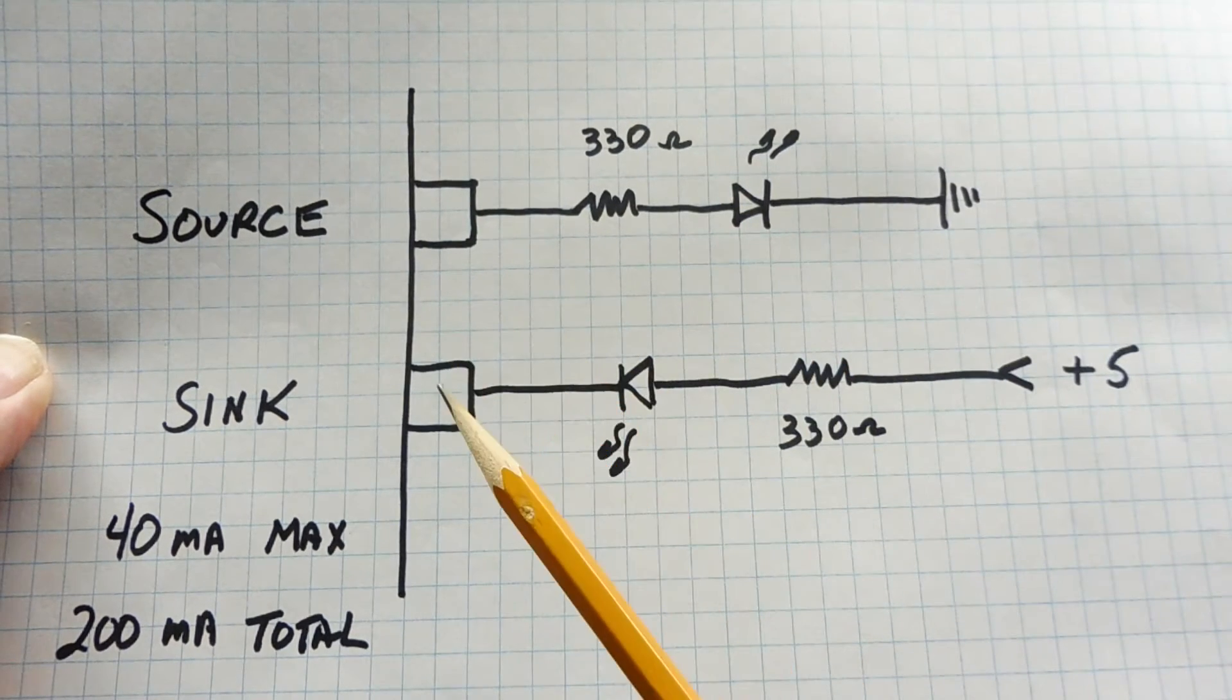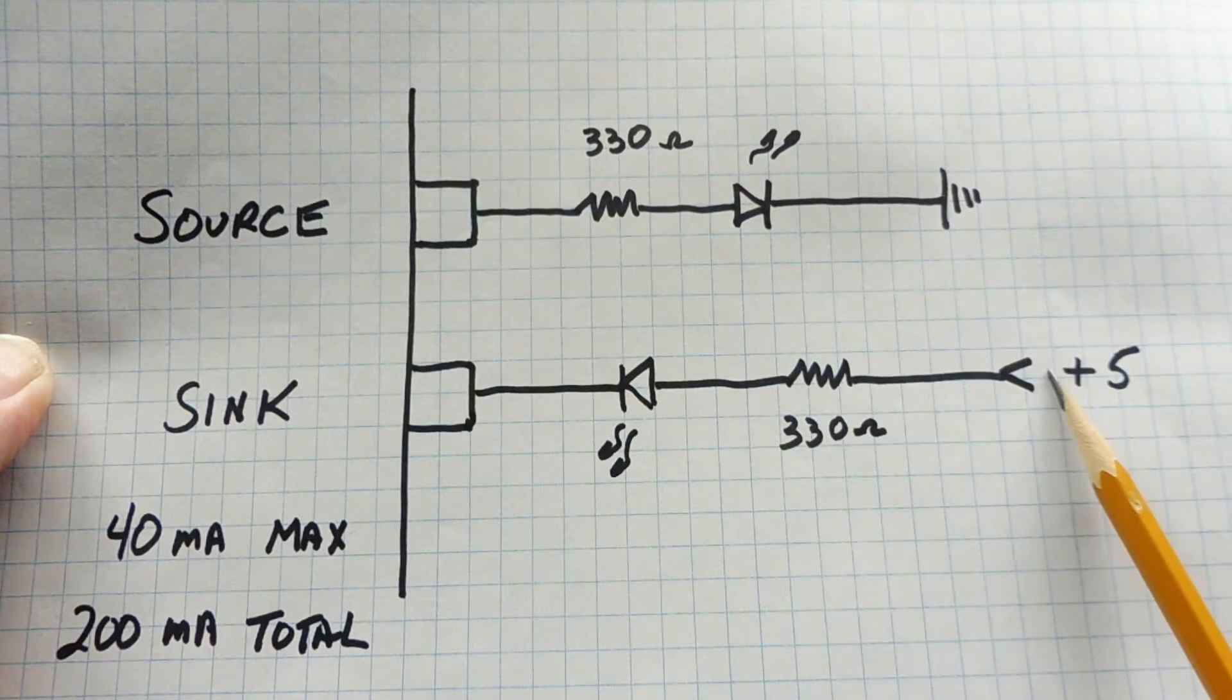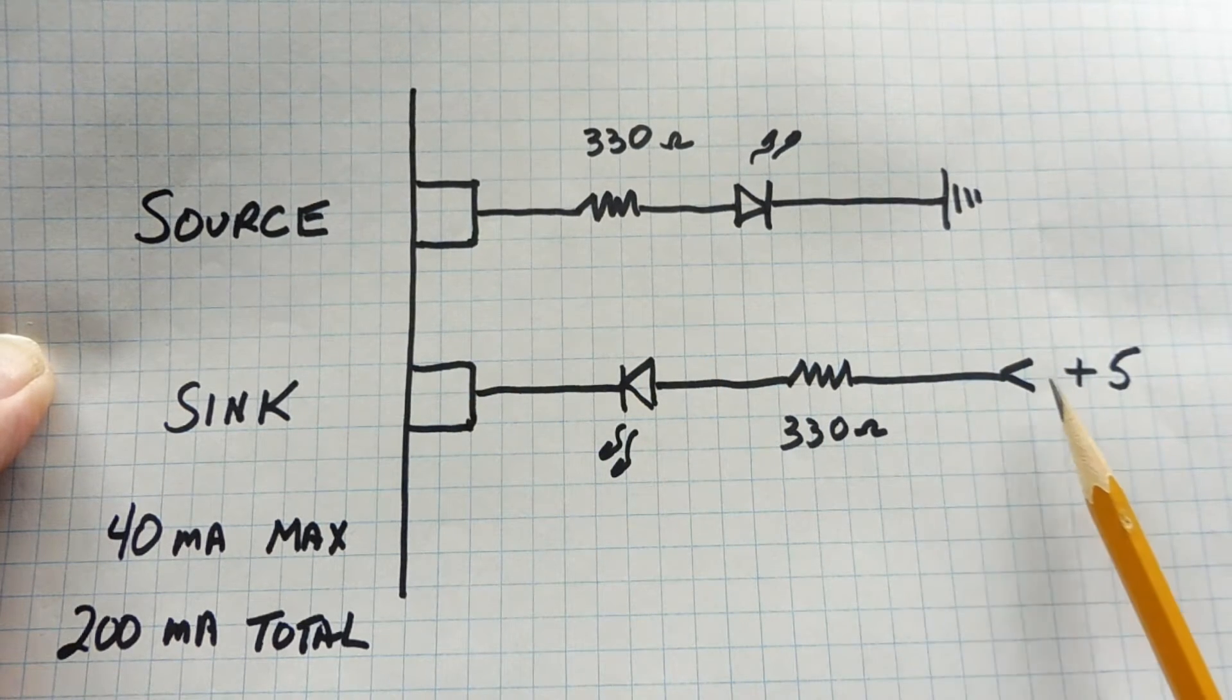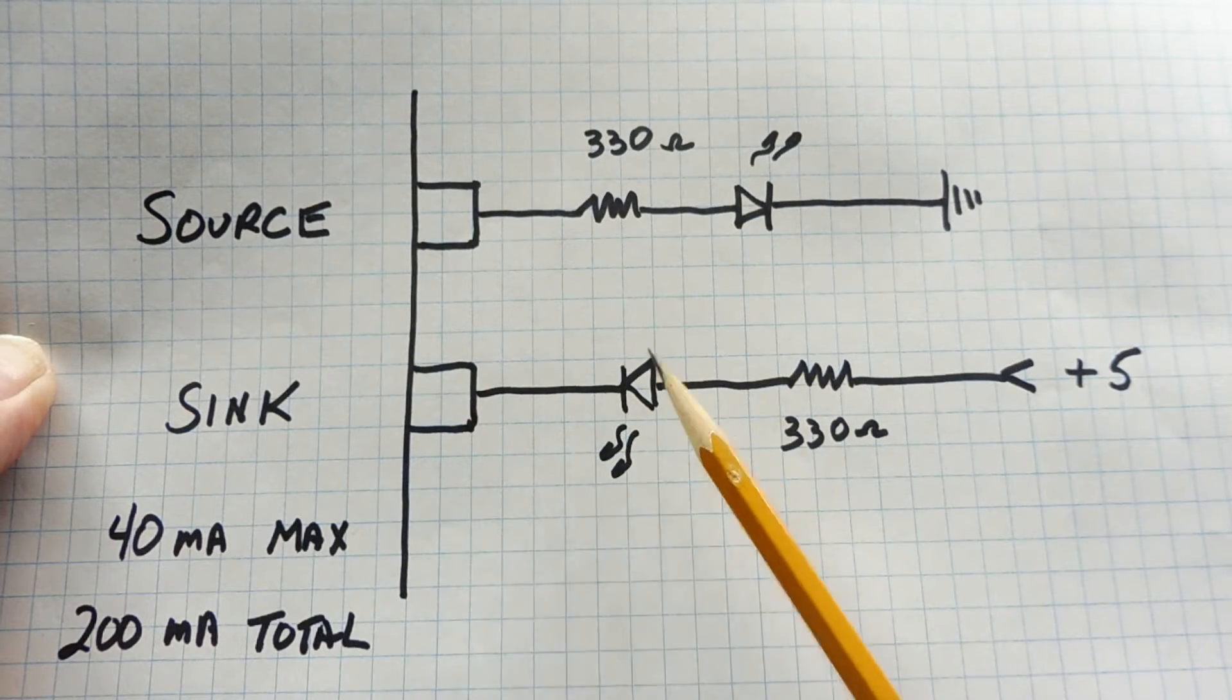The pin that is sinking current, the user supplies the 5 volts, and the microcontroller supplies the ground. So you have current flowing from 5 volts through the resistor LED to ground and turning on the LED.